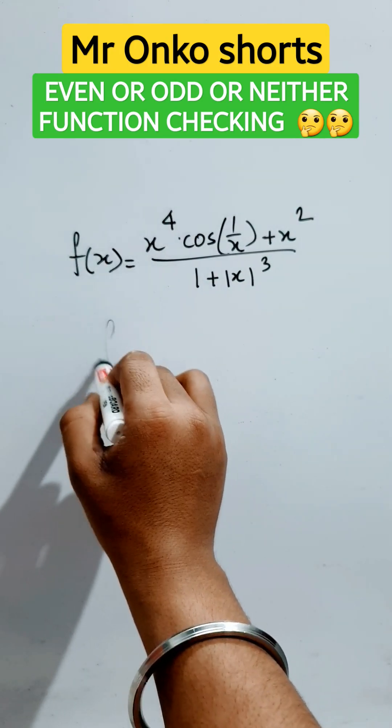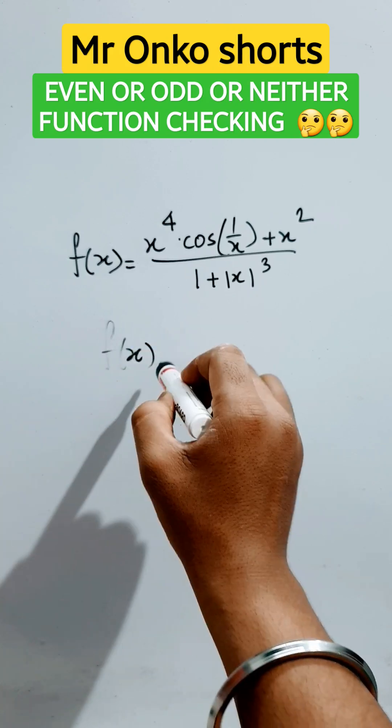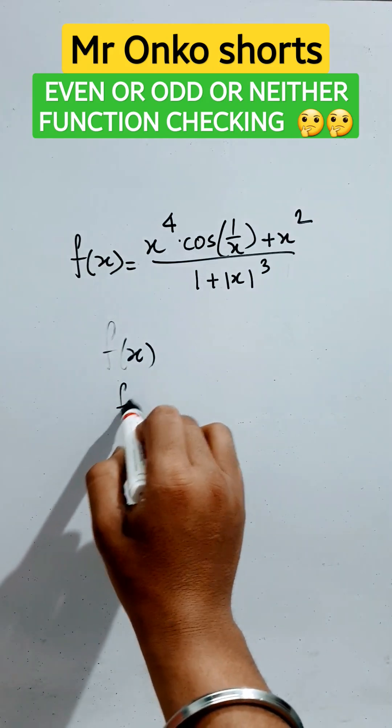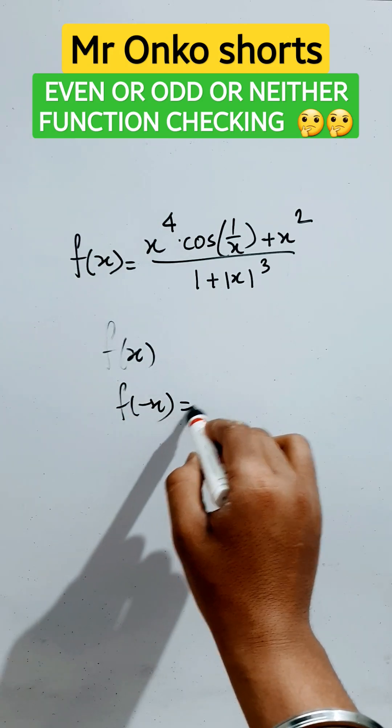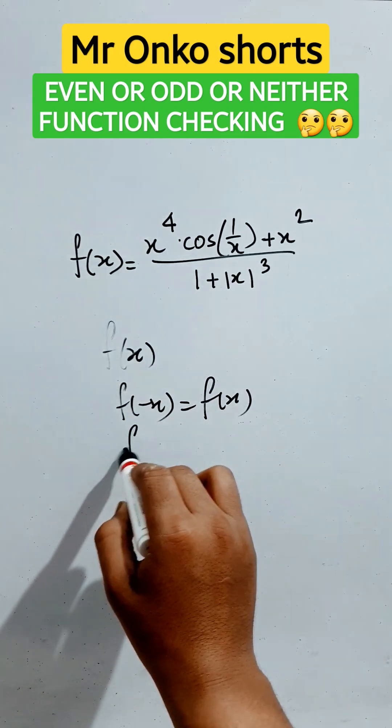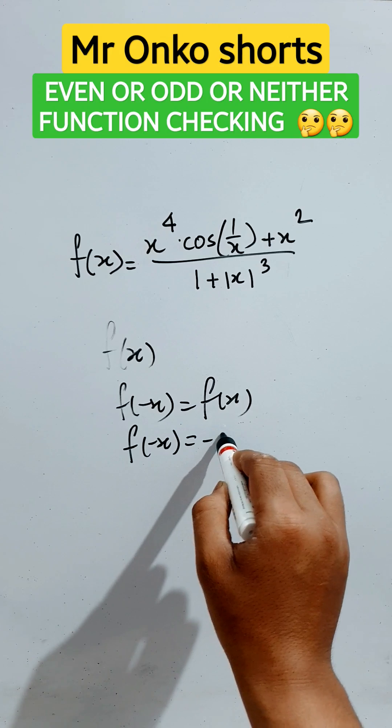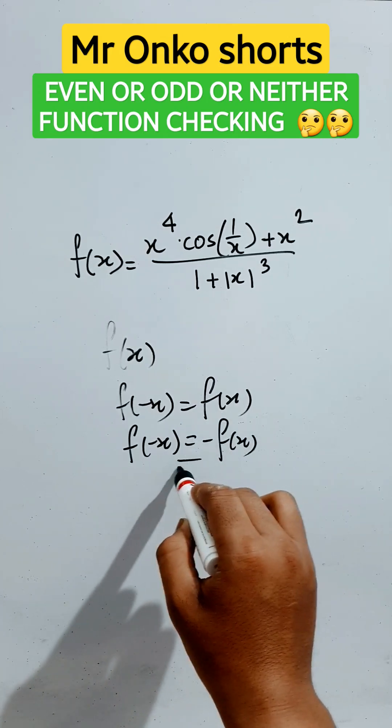So first of all, let's learn: if a function is an even function, then if you put minus x in the function given, it will provide f(x). And if you put minus x and it provides minus f(x), then the function is odd.